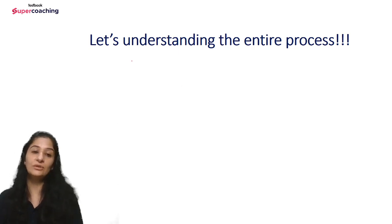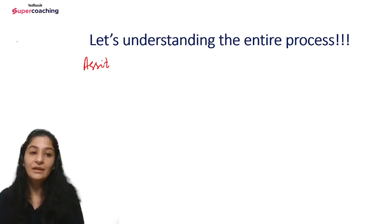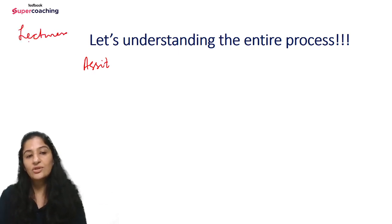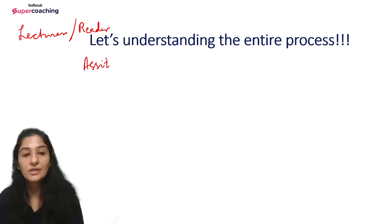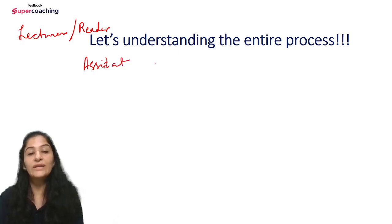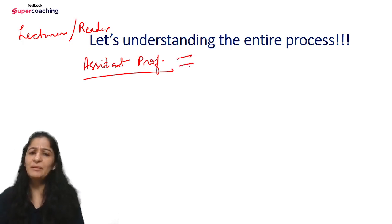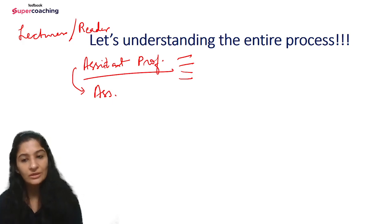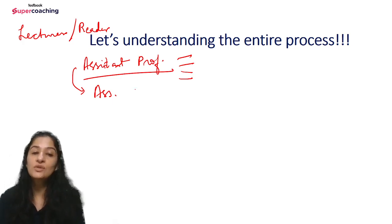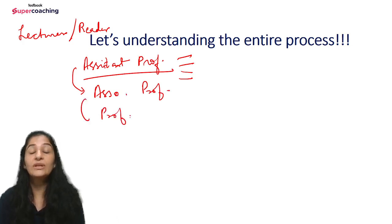So where does it all start? If you remember, initially there were posts of Lecturer or Reader in colleges and higher education institutions. Now that has been replaced by Assistant Professor in a university, which is the starting level. There are many levels — after Assistant Professor, those who get a promotion become Associate Professor. And the final rank is Professor, which is a very senior post in the Indian university system.